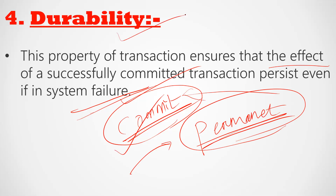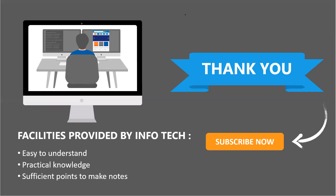This is the fourth property of a database system: Durability. So these four properties — Atomicity, Consistency, Isolation, and Durability — must be followed by every transaction in a database system. In the next class, we will learn more about this topic. Today we learned about the ACID properties of a transaction. Thank you.